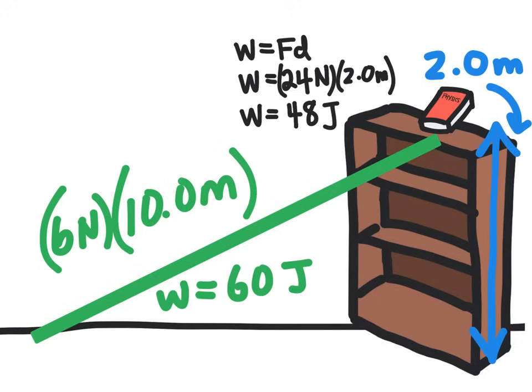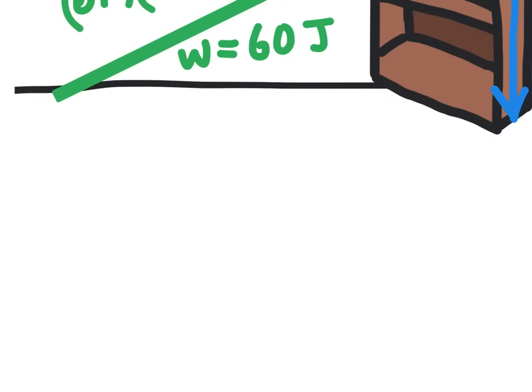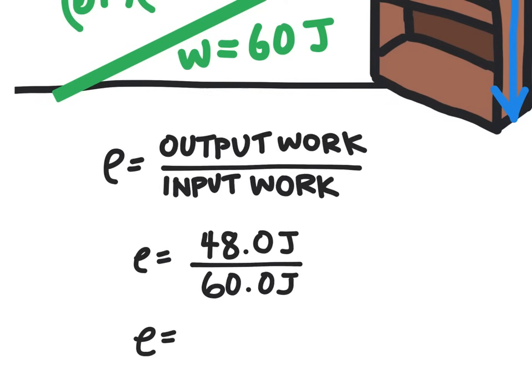Now the input work is what we did, and so that's what we calculated down here. Let's go ahead and plug those into our equation. And so we have our output work divided by our input work, which is 48 divided by 60. And when we do that calculation, we end up with 0.8. Now if we multiply that by 100, we'll turn that into a percentage. And so this inclined plane is 80% efficient.